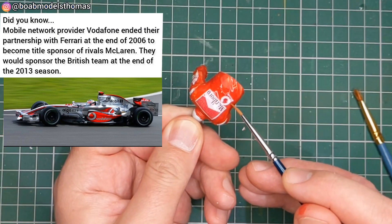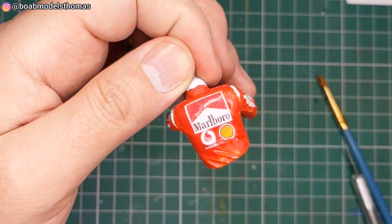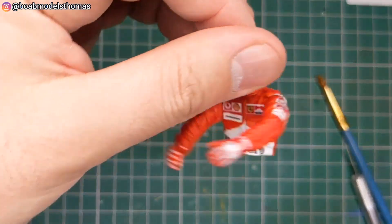Then on the back this is my printed Vodafone decal and the shell decal that came with the kit. Looks pretty good if I say so myself.